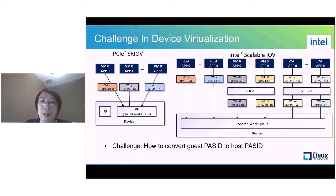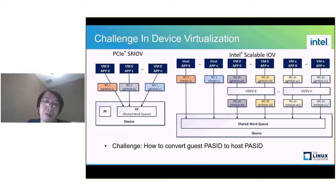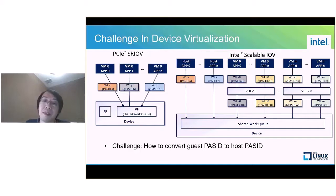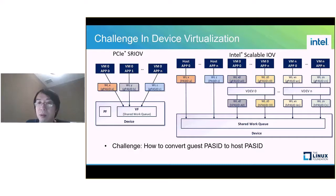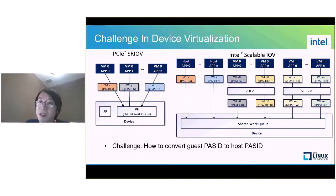The challenge in device virtualization: as shared virtual addressing SVA is used, we face a challenge. Users in virtual machines are not aware of host PASID. So workloads are submitted together with guest PASID. But the device and IOMMU use the host PASID for DMA operations. So how do we convert guest PASID to host PASID in device virtualization? A new instruction — ENQCMD — is introduced to address this gap.